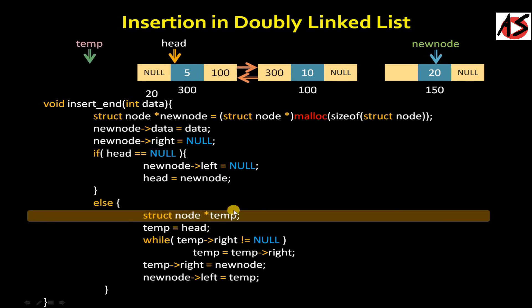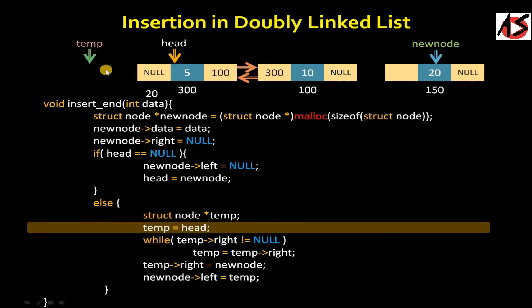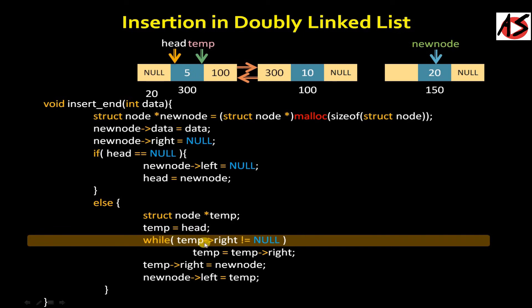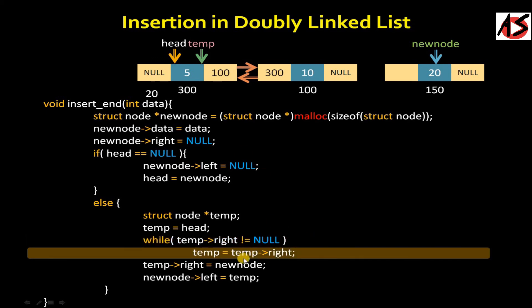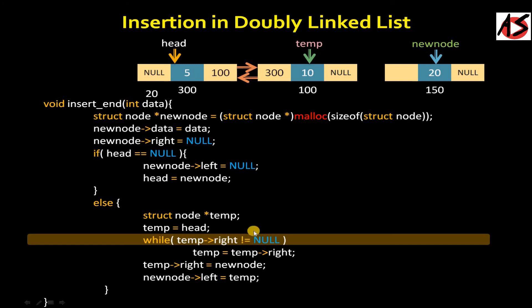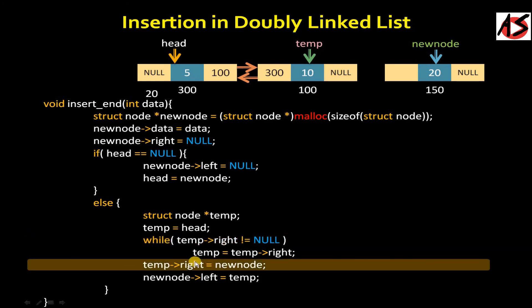In the else part we take one temporary pointer. We set temp equal to head, so temp is now pointing to the head node at address 300. Then we check the while condition: temp right not equal to null. Here temp right is 100, not null, so the condition is true and we go inside the while loop, where temp equals temp right — shifting the pointer to the next node at address 100. We check the while condition again: temp right is null now, so the condition is false and we exit the loop.